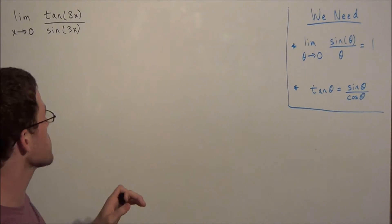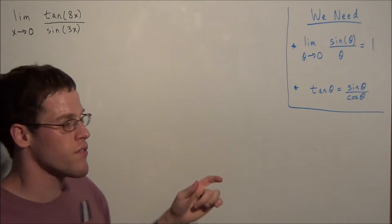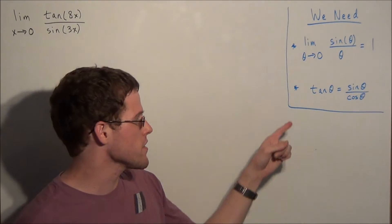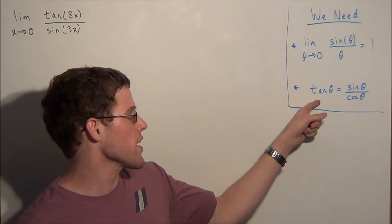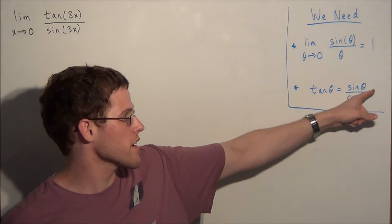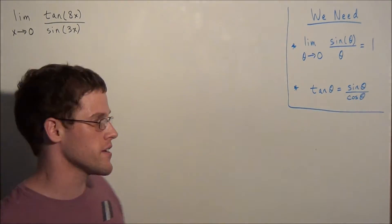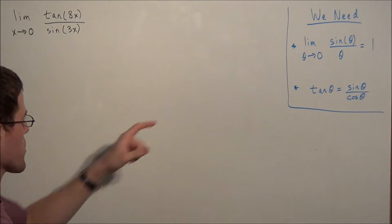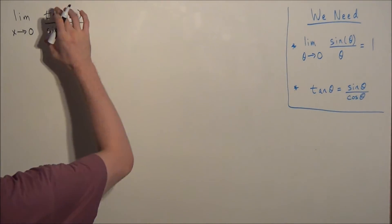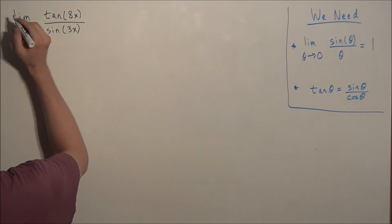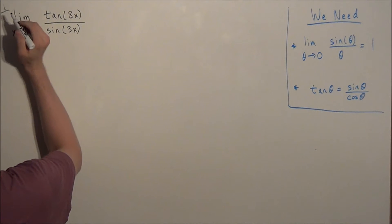What we want to do is make use of the identity for tangent, where tangent of theta equals sine theta over cosine theta. We're going to apply this identity to this problem.